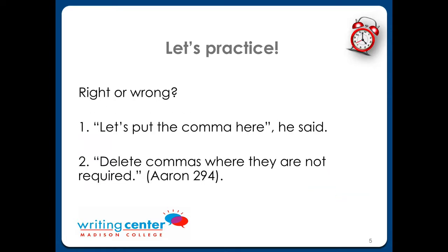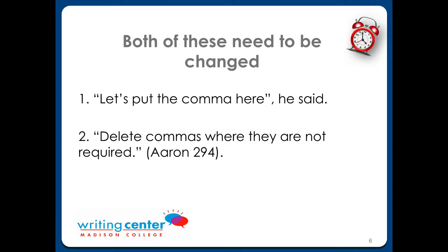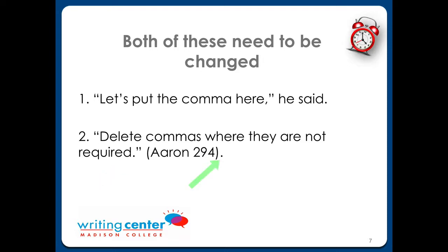It's time to practice. Pause this video and use what you've learned to work on these sentences. Both of these sentences have problems. Let's start by asking: is this dialogue or a quote from a source? It looks like dialogue, so we'll move the comma inside the quotation marks, and the period goes at the end of the sentence. Now the second sentence has a quote from a source. The problem here is that there is an extra period. The only place you need a period is at the very end, right here. So delete this one.